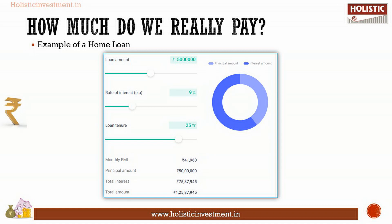Let's say you have finalized a property for about 75 lakhs. You have planned to make 25 lakhs as a down payment and approach a bank for a loan of Rs. 50 lakhs for the rest. Consider that you are drawing a monthly salary of more than 1 lakh and a 40k EMI is manageable, so you go for it.